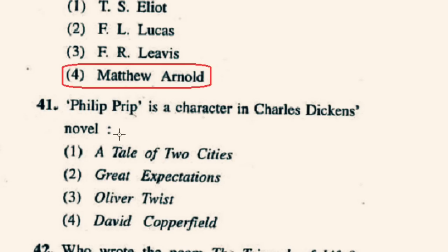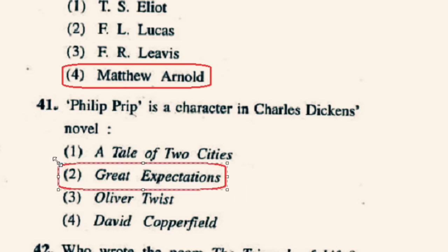Question number 41: Philip Pirip is a character in which Charles Dickens novel? Philip Pirip, also known as Pip, is the protagonist of Great Expectations by Charles Dickens. It was originally published in 1861. So option 2nd, Great Expectations, is correct.